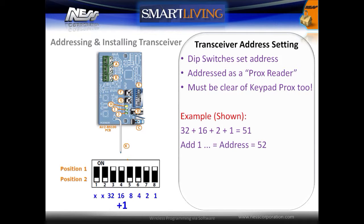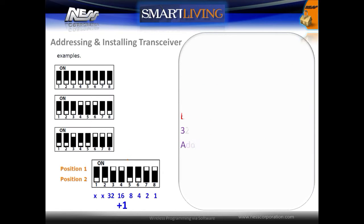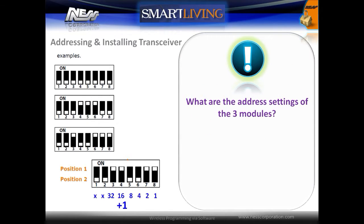In the example shown, we have switches 3, 4, 7 and 8 on. This gives us a total value of 51, and then adding 1 we get the address of 52. Additional information can be found in the tech notes included with every Smart Living panel or in the installation manual on page 34.